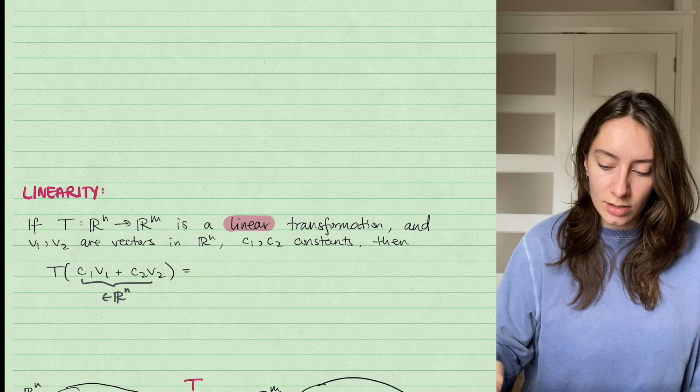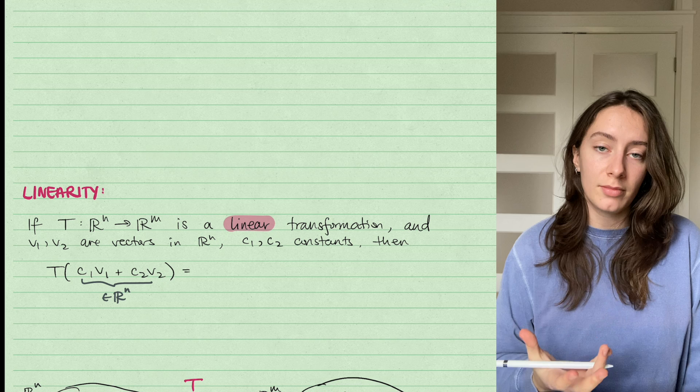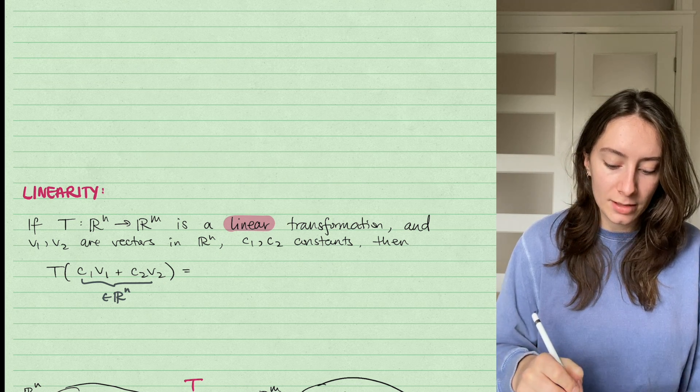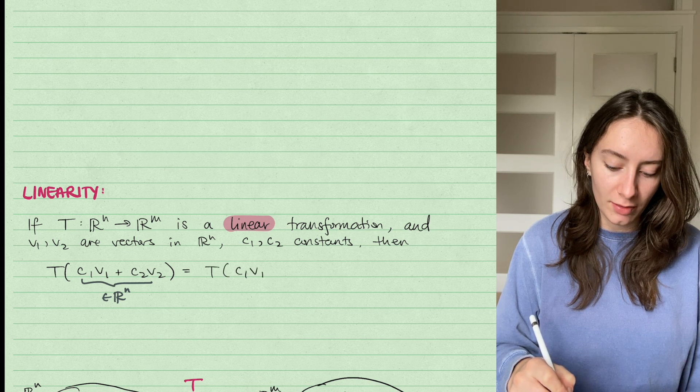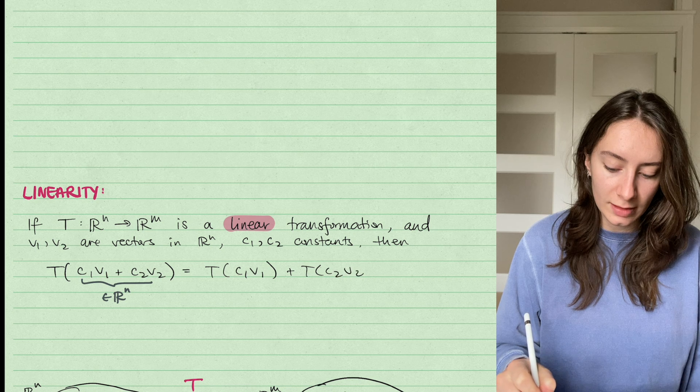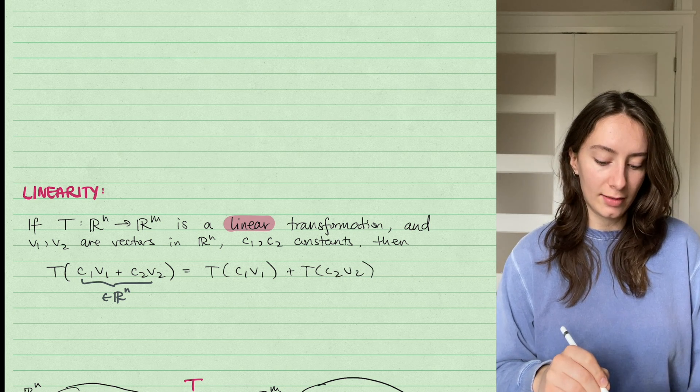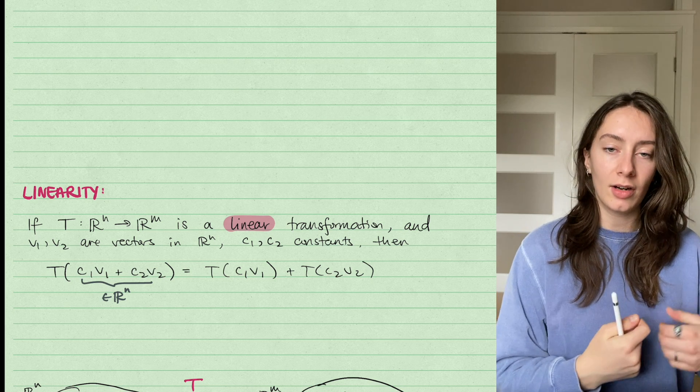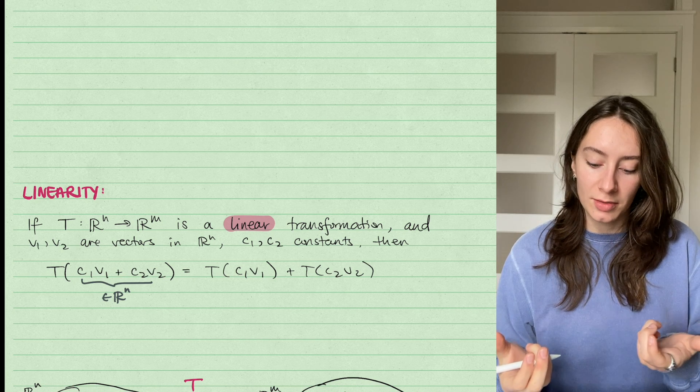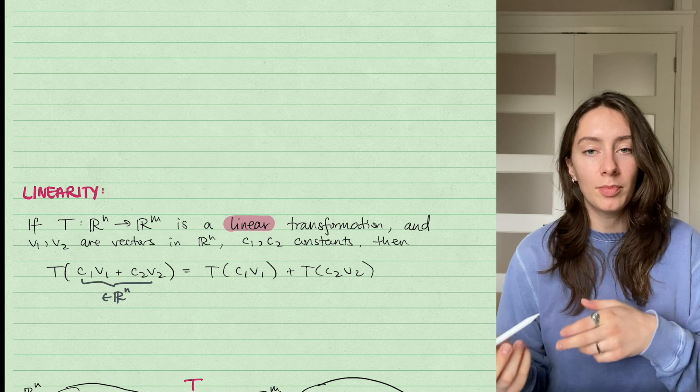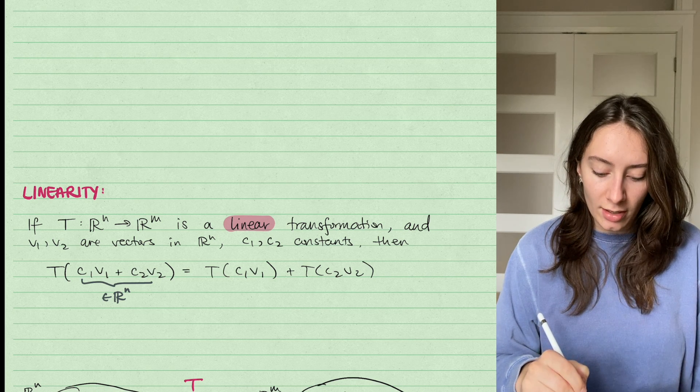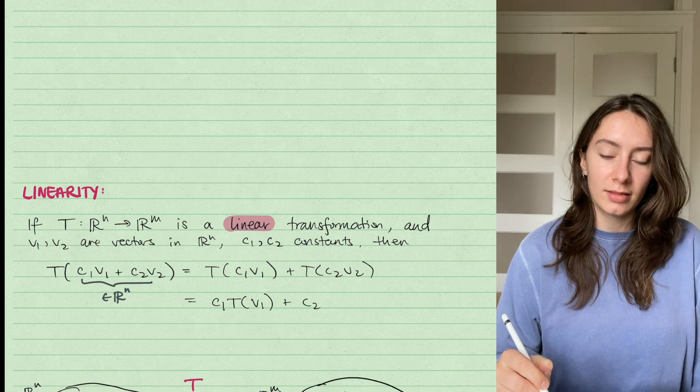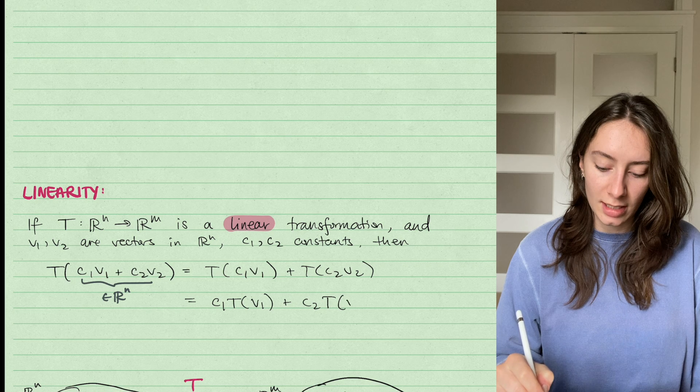I can distribute the linear transformation across sums and across scalar multiplication or multiplication by constant. So I could rewrite this as T(C_1V_1) + T(C_2V_2). And it's also saying that I can take constants out of a linear transformation. So I could rewrite this as C_1 times T(V_1) + C_2 times T(V_2).